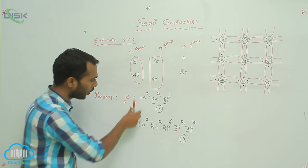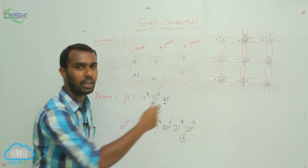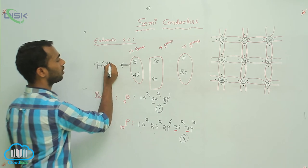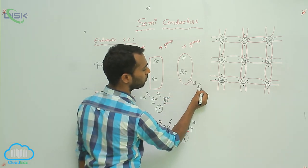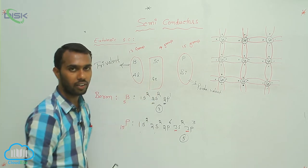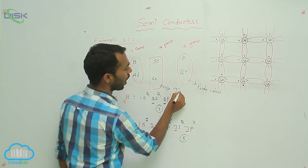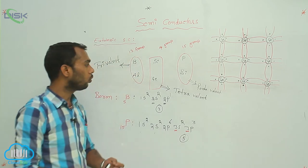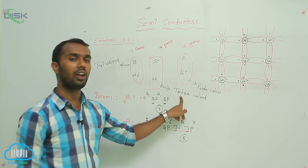So all elements in the 13th group have 3 electrons in the outermost orbital — these are called trivalent elements. All elements in the 15th group have 5 electrons — these are called pentavalent elements. Silicon and germanium have 4 electrons in the outermost orbital, so they are called tetravalent elements. These pure tetravalent elements are the semiconductors we dope.